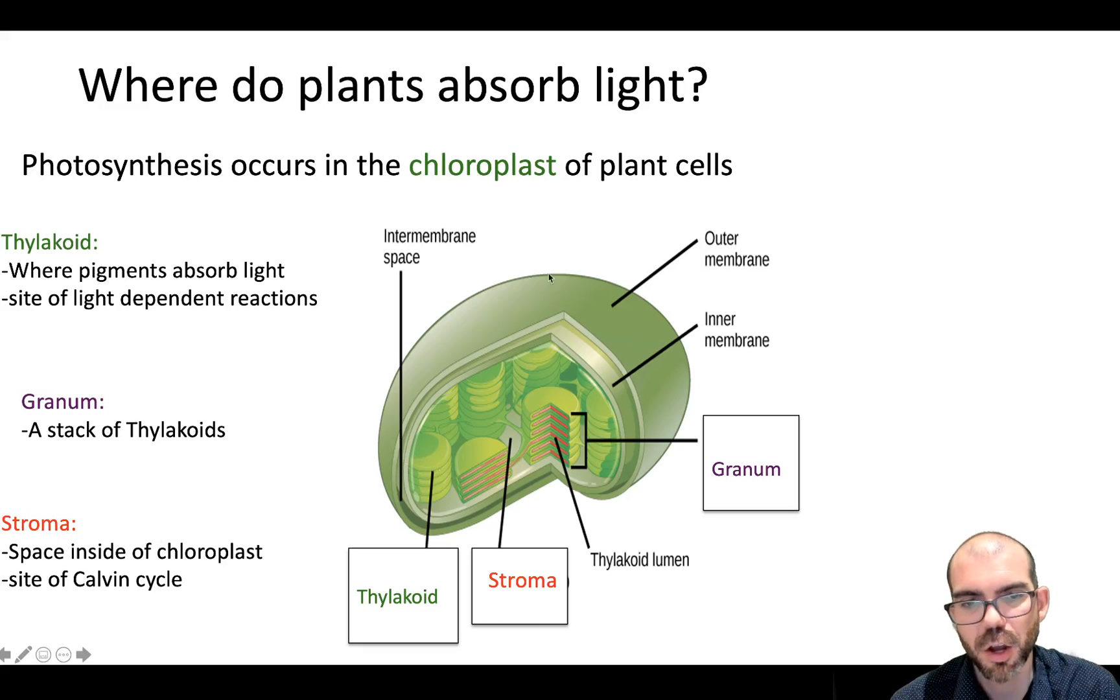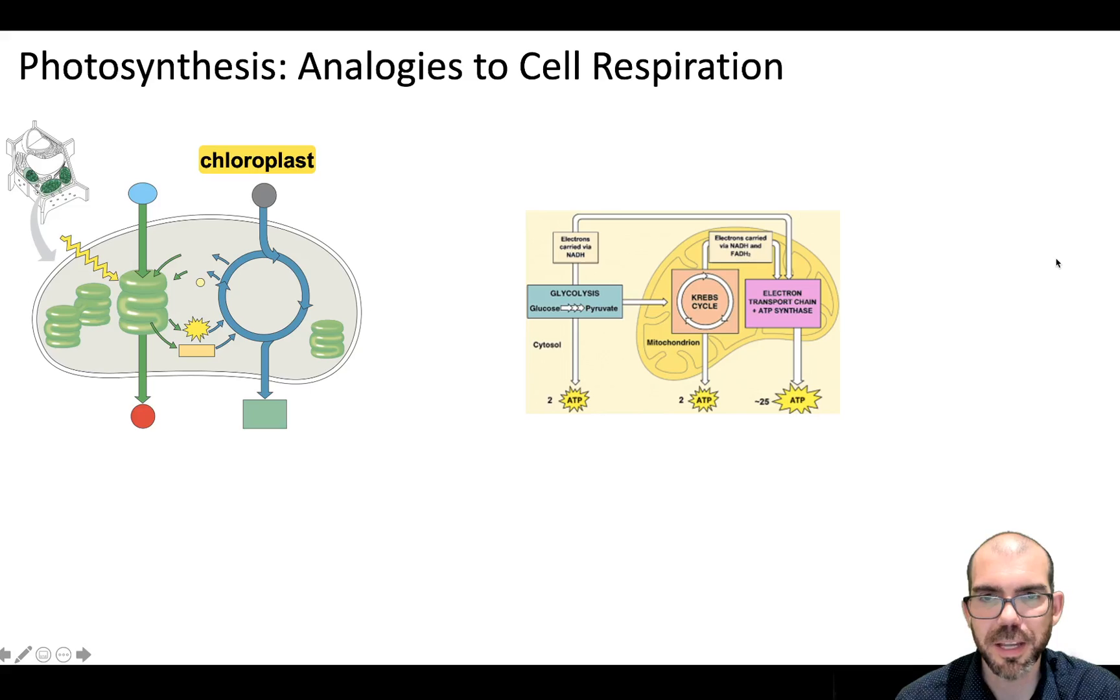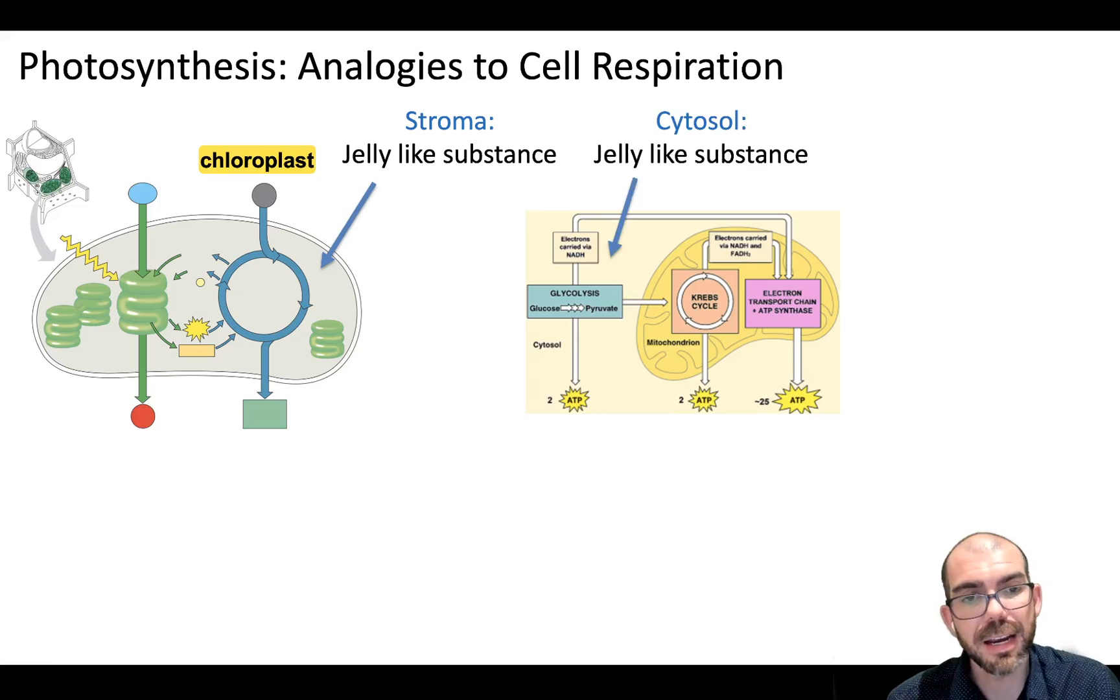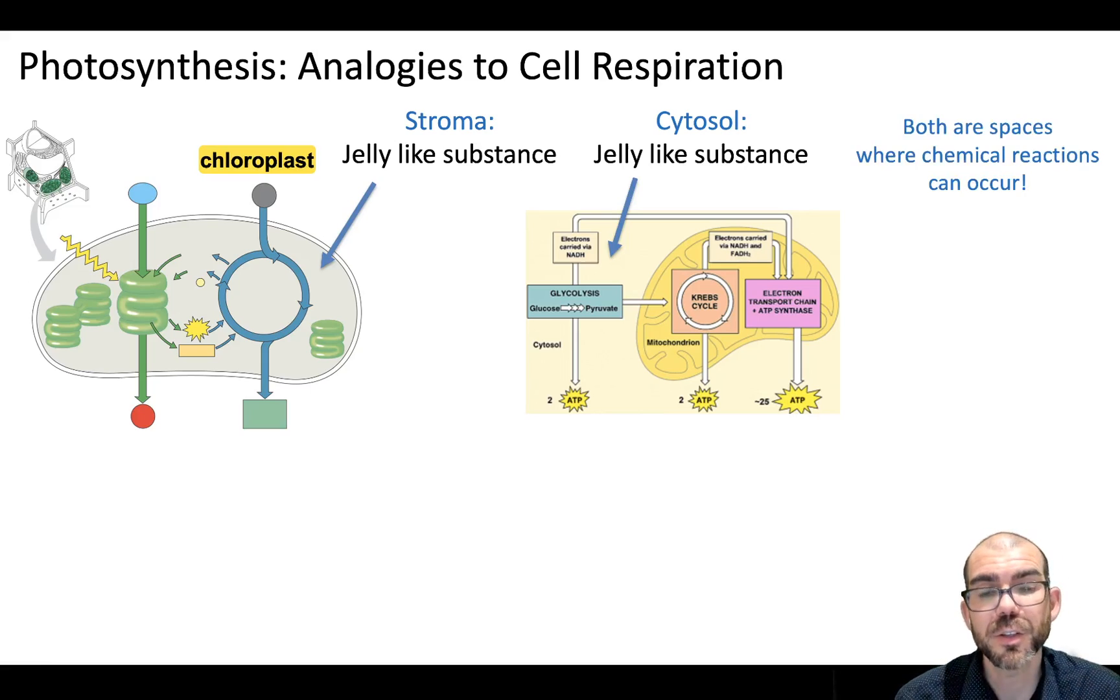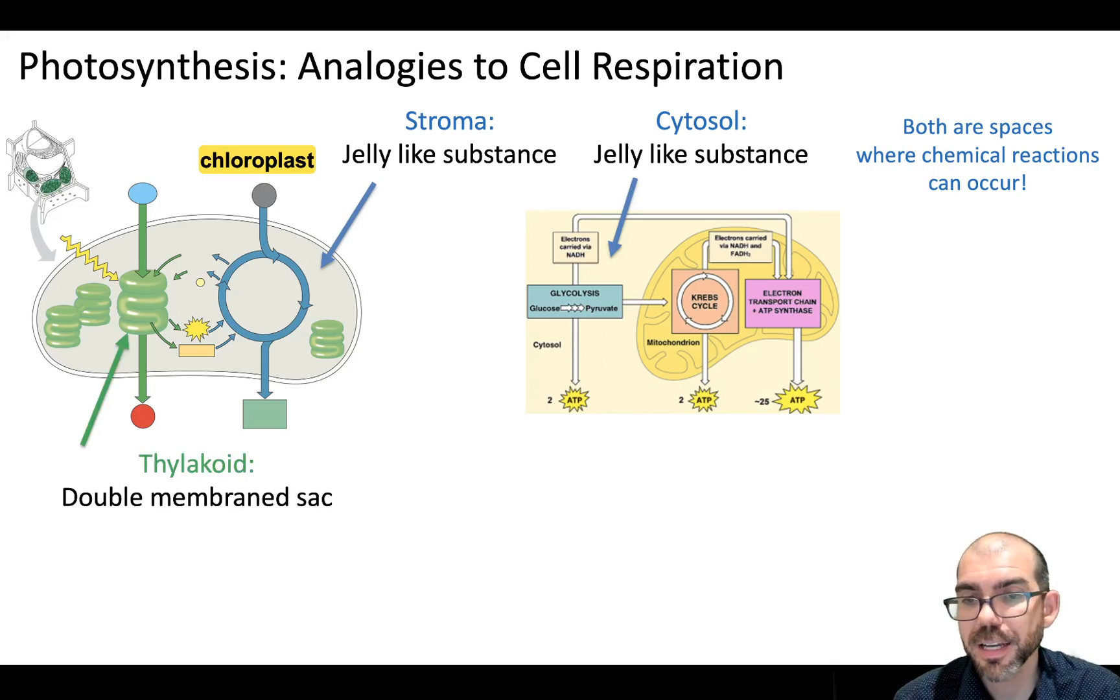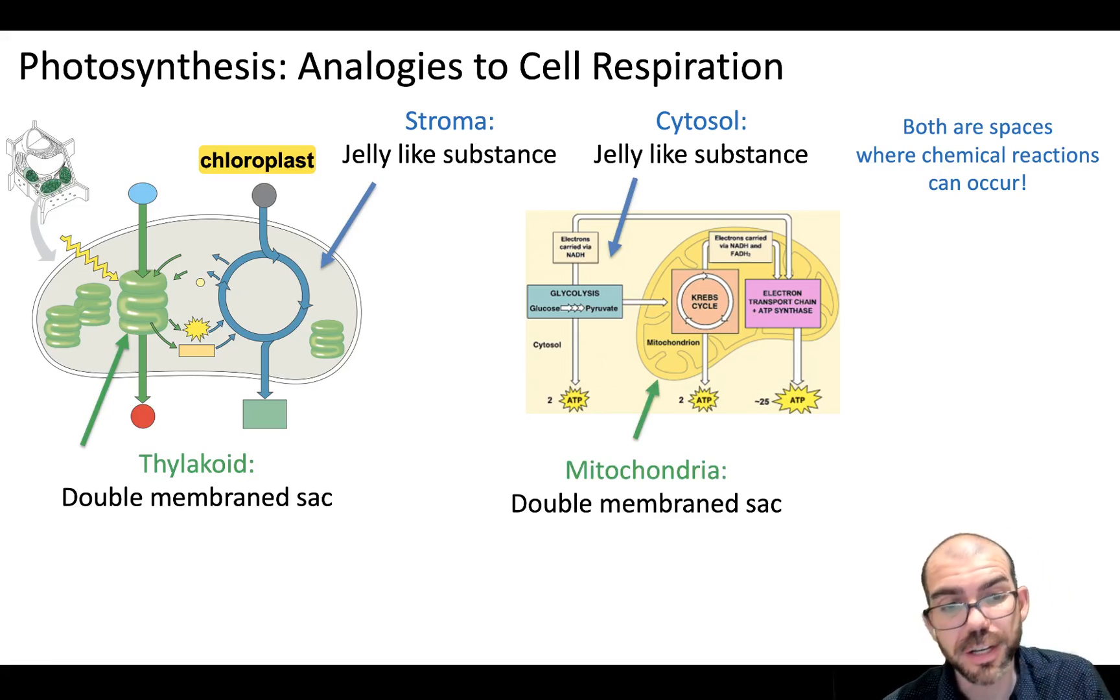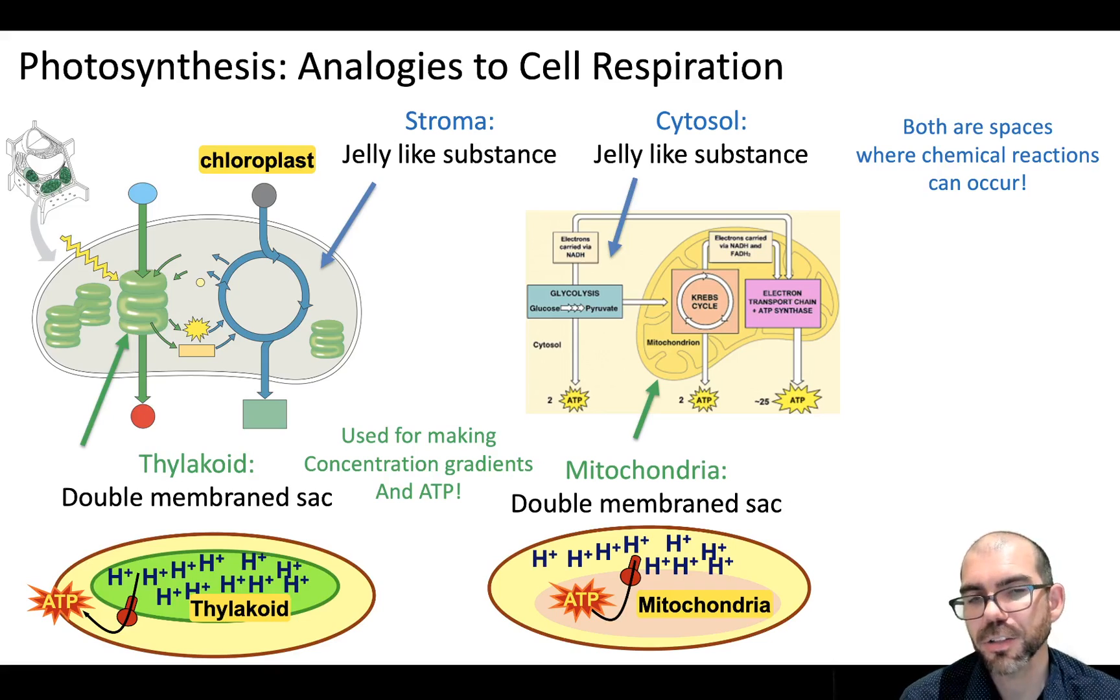So we have the thylakoid disk, granum stack, and stroma as the space within. I want to draw a couple analogies before we jump in deeper between photosynthesis and cellular respiration. Notice that in cellular respiration with the chloroplast, there's a jelly-like substance called the stroma, and in cellular respiration, there was a jelly-like substance called the cytosol inside of the cell. In both of these spaces, this provides a location where chemical reactions can and do occur. Another similarity is we have thylakoids, or double membrane sacs, inside of our chloroplast. The mitochondria is also a double membrane sac. This is important because both are able to create concentration gradients with hydrogen ions for the synthesis of ATP with ATP synthase.